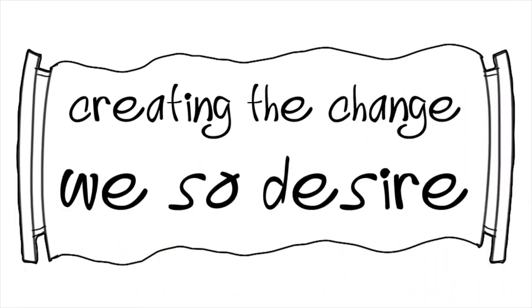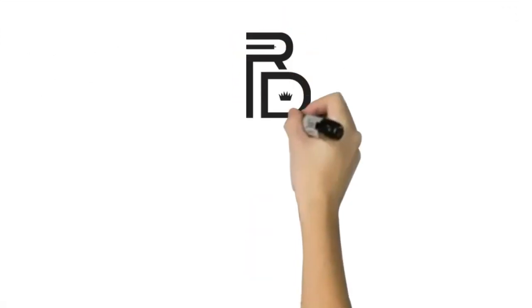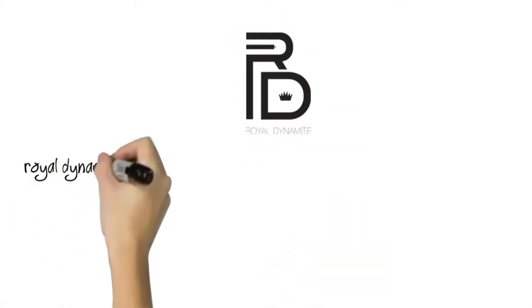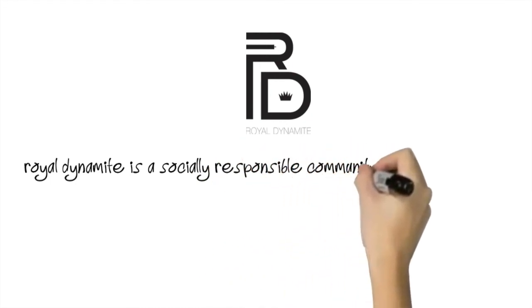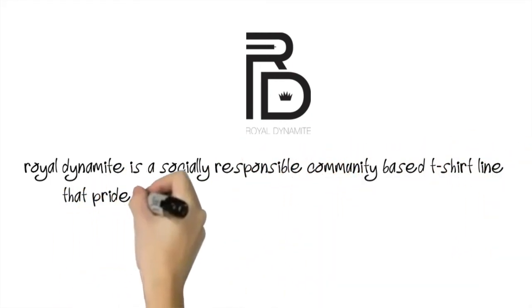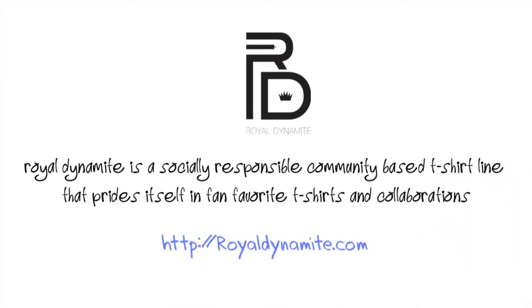Wear a t-shirt and empower a student through education. RD Cares. Royal Dynamite is a socially responsible community-based t-shirt line that prides itself in fan-favorite t-shirts and collaborations.